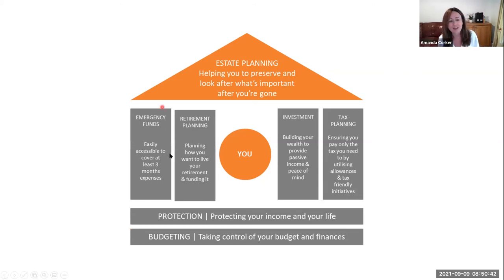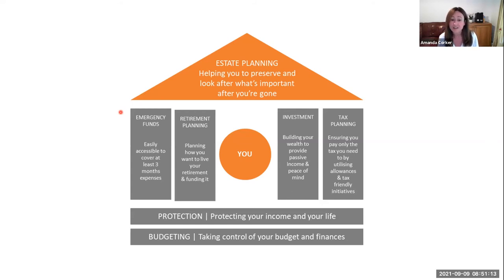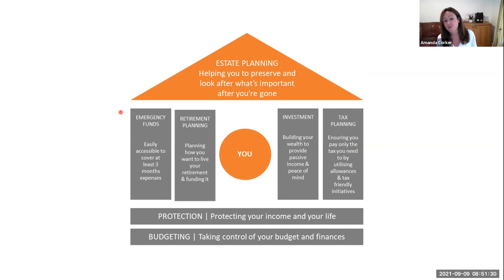I talk about protection — life protection and protecting your income. Those are the foundations, and without them the whole house could come crumbling down. I then talk about my four pillars — the gray boxes — starting with emergency funds and the importance of cash on deposit. I then talk about retirement planning and building your funds for retirement. I'll go to a separate diagram on compound growth and the benefits of starting early, then investment portfolios and building passive income, and then tax planning — utilizing different allowances and tax wrappers.